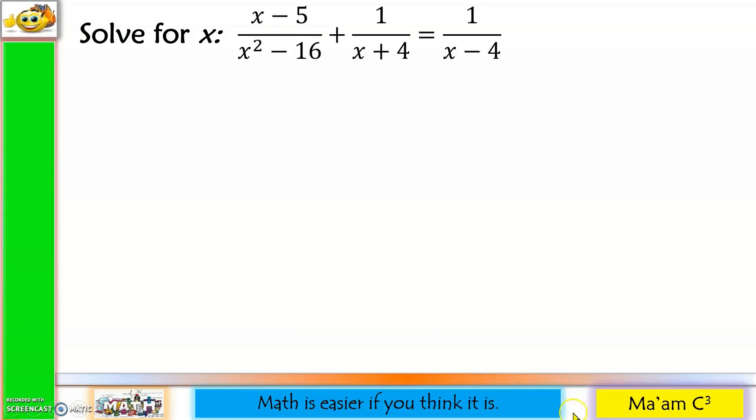Let's have the next example. Oh, it looks difficult, but it's not. First step: find the LCD. Now, in finding the LCD, factoring is important. The factors of x squared minus 16 are x minus 4 and x plus 4. Notice that the factors are the same with our denominators here. So this will be our LCD.